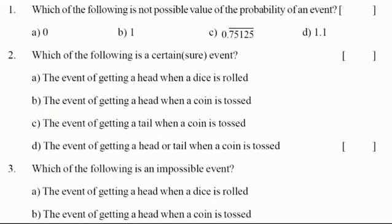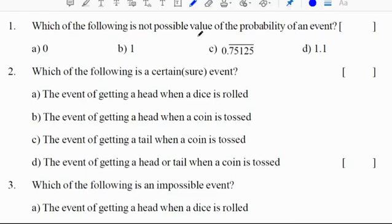We will see some more questions from Abhyasa Deepika. Which of the following is not a possible value of the probability of an event? We know probability always lies between 0 and 1, including 0 and 1. So 0 is correct, 1 is correct, 0.75 is less than 1 so correct. But 1.1 is greater than 1, so the correct option is D.